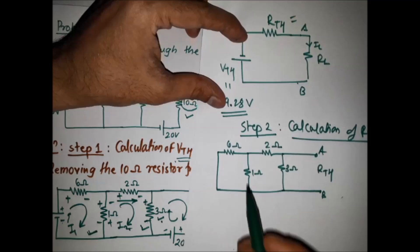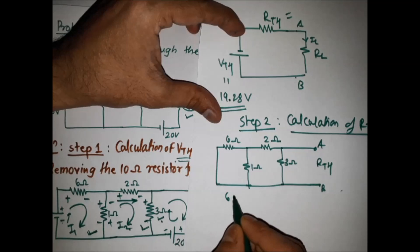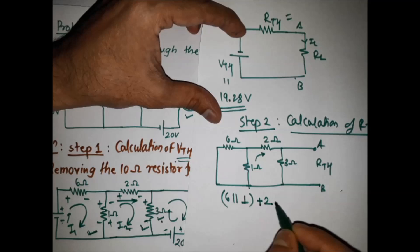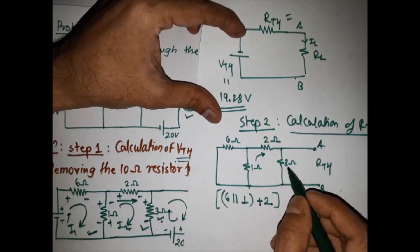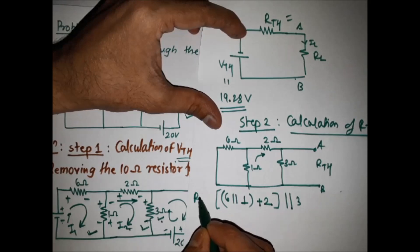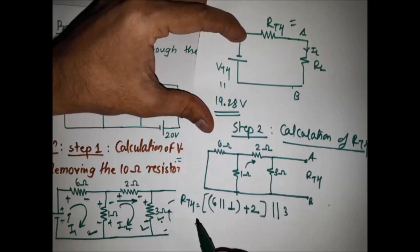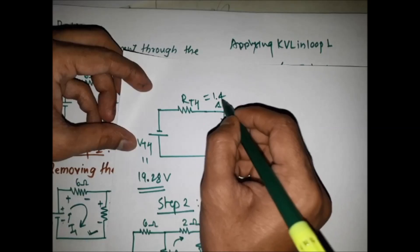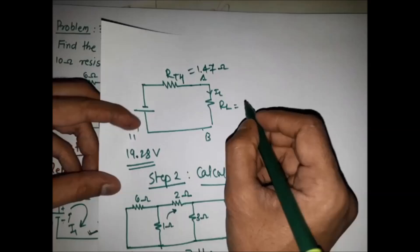Now, the 6 ohm and 1 ohm resistors are in parallel. This parallel combination is then in series with the 2 ohm resistor. That series combination is then in parallel with the 3 ohm resistor. Solving this gives RTH = 1.47 ohms.